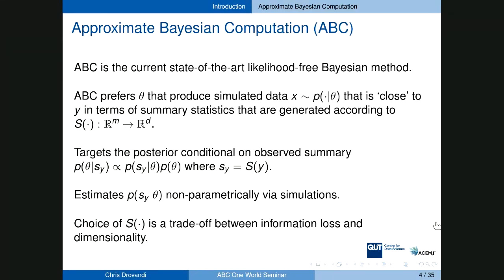Probably the most popular method for parameter estimation when we can only generate simulations from the model is a technique called Approximate Bayesian Computation, or ABC. In ABC, we prefer parameter values that can generate simulated data close to the observed data. This measure of closeness is typically based on a particular choice of summary statistics believed to be informative about the parameter. There has been recent research trying to move away from selecting summary statistics, but for many applications it may still be necessary to reduce the full data set to a low-dimensional set.